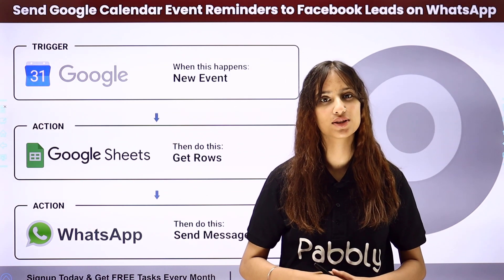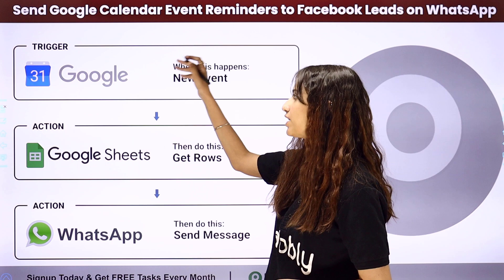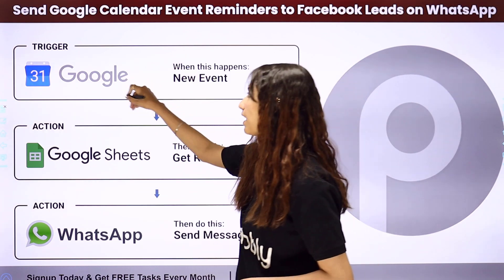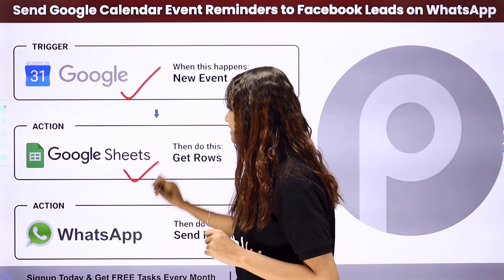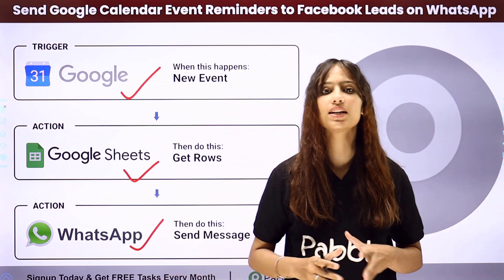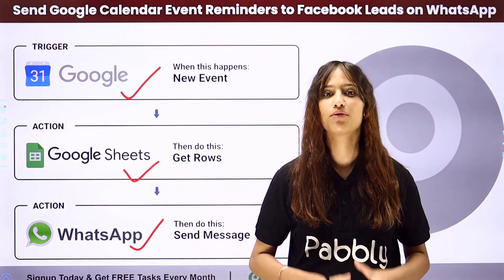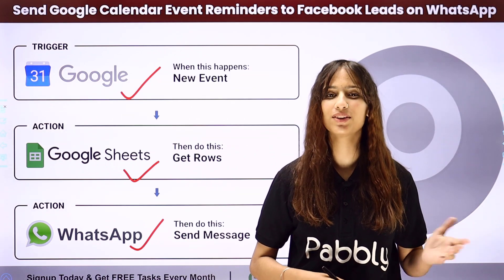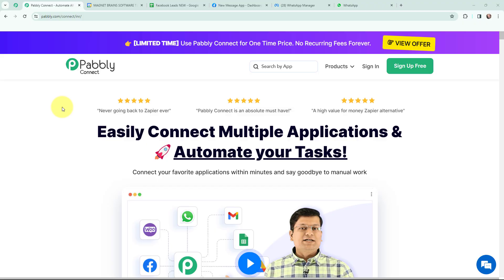Pably Connect follows the concept of trigger and action. The trigger application will be Google Calendar and the action applications will be Google Sheets and WhatsApp. To send the WhatsApp message, I am using WhatsApp Cloud API. In this video we will understand how to send Google Calendar event reminders to your Facebook leads on WhatsApp.